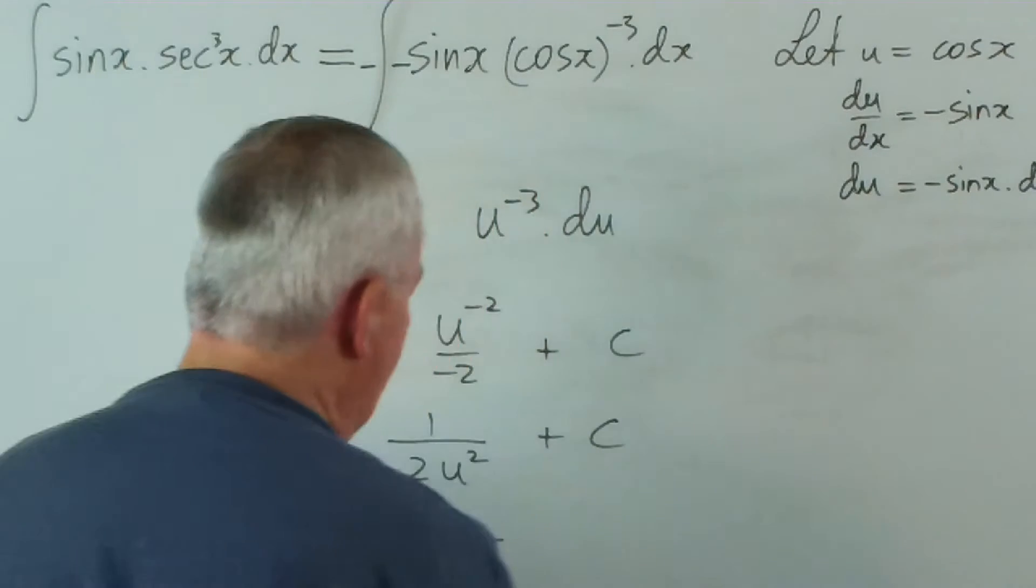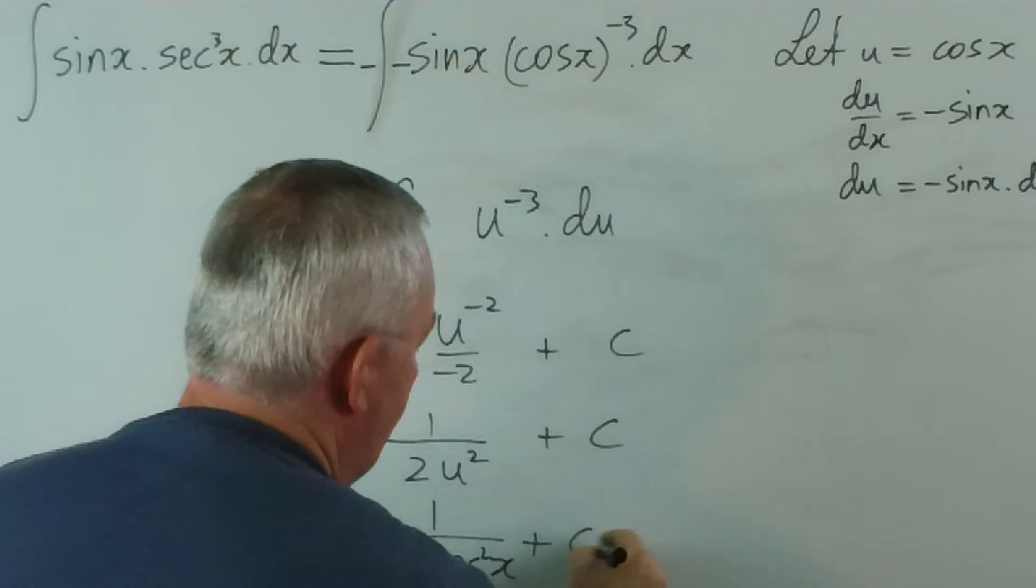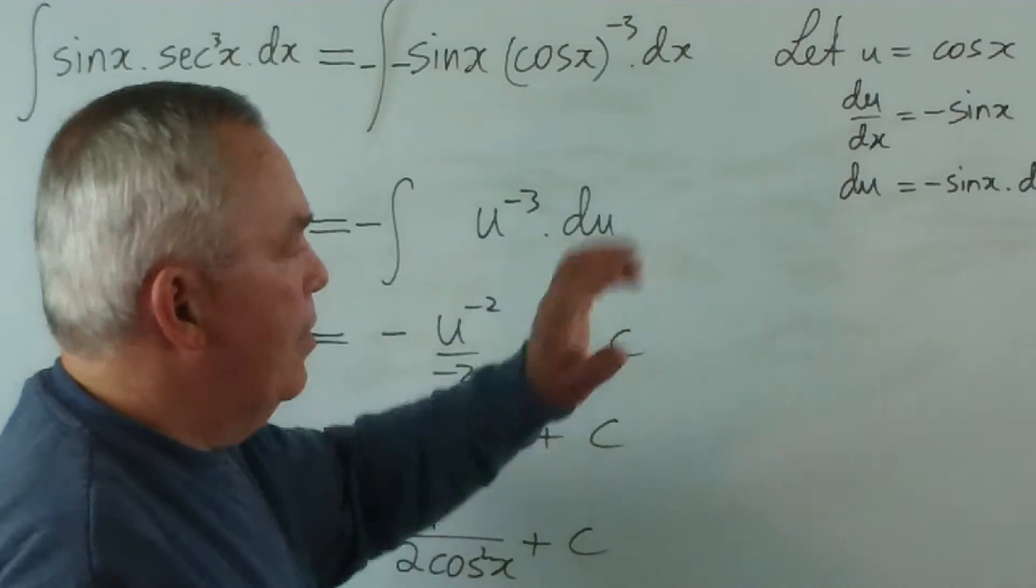Since u was worth cos x, we would have 2 cos squared x plus c. The same answer. This time done using substitution.